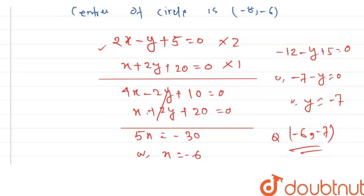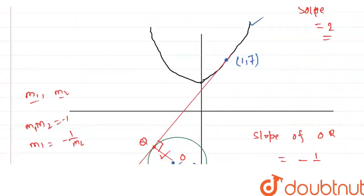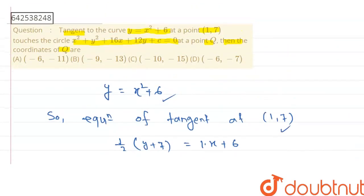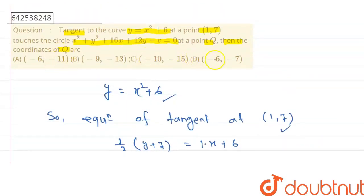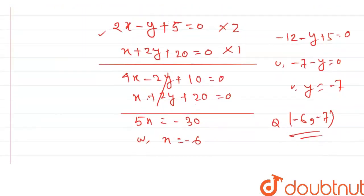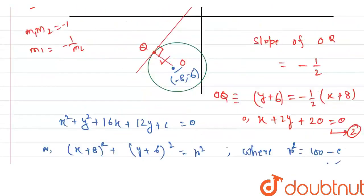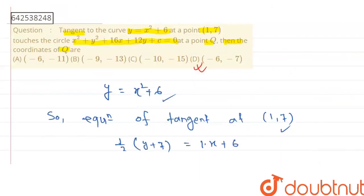Now come to the options. Option D is (-6, -7). The correct answer is option D, because we found the coordinate of Q to be (-6, -7). Thank you.